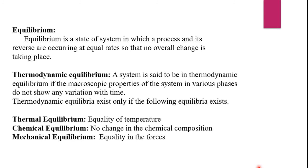Thermal equilibrium is equality of temperature, which implies that there should not be flow of heat from one portion of the system to another. Chemical equilibrium means no change in chemical composition — this implies that no change in composition should occur in any part of the system with passage of time. Mechanical equilibrium means equality in the forces, which implies no work should be done by one part of the system over another, meaning there should not be any force applied by one part to another part in the system.